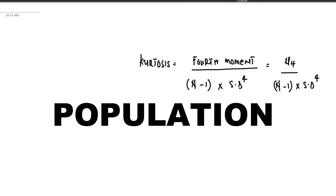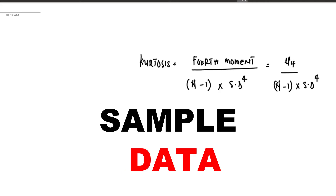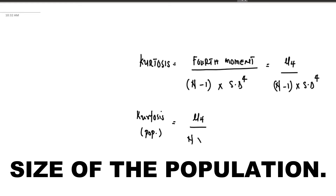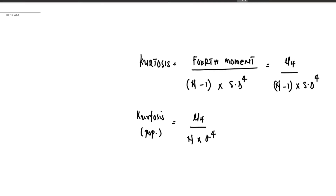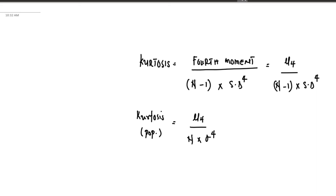We can have the kurtosis based on population data and kurtosis based on sample data. For population data, the kurtosis formula is: kurtosis equals the fourth moment divided by n — which represents the size of the population — times the population standard deviation raised to the power of four.